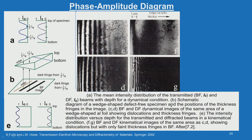Schematic B shows the wedge shaped defect-free specimen and the position of the thickness fringes in the image. C and D are bright field and dark field dynamical images of the same area of the wedge shaped aluminum foil showing the dislocations and thickness fringes. E shows the intensity distribution versus depth for the transmitted and diffracted beam in the kinematic condition. F and G are bright field and dark field kinematical images of the same area as C and D, showing the dislocations but with only faint thickness fringes in bright field.